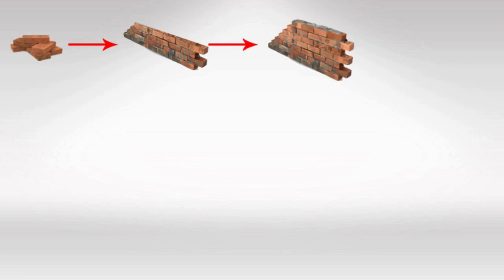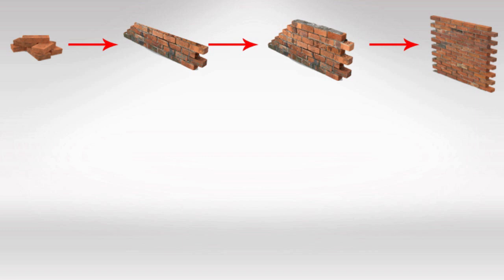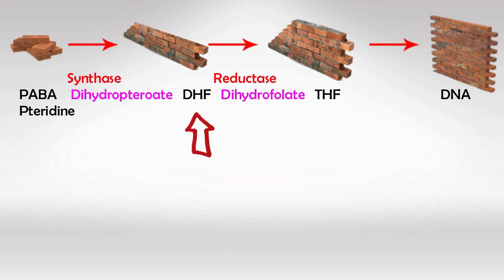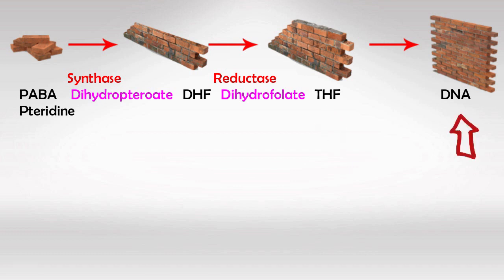To understand the mechanism of action, let's look at this first. Imagine you want to build a brick wall — first you're going to have to bring some bricks and then start building the wall, and it will get bigger and bigger. This is essentially how DNA is made. First we bring the bricks, which are PABA and pteridine. These building blocks become dihydrofolic acid using the enzyme synthase, which then becomes tetrahydrofolic acid using the enzyme reductase, and that will become DNA.